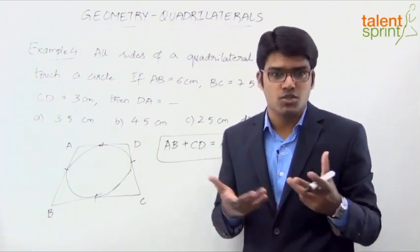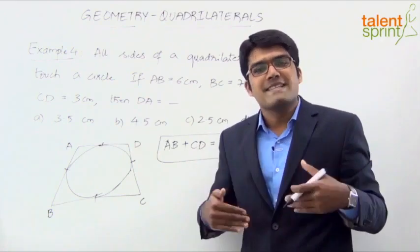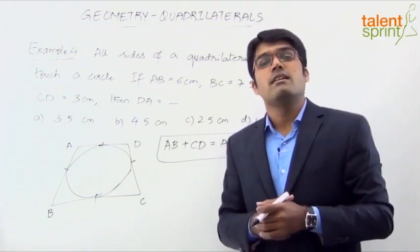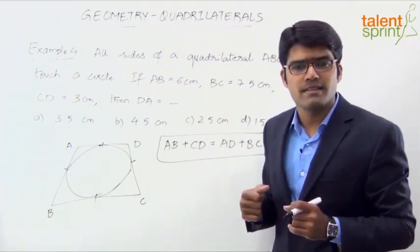Well, in a rectangle you cannot draw a circle which touches all the four sides. It is not possible because the sides are parallel and they are equal. So it will be impossible for us to draw a circle such that all the four sides of a rectangle will touch it, but you can take a square as an example.